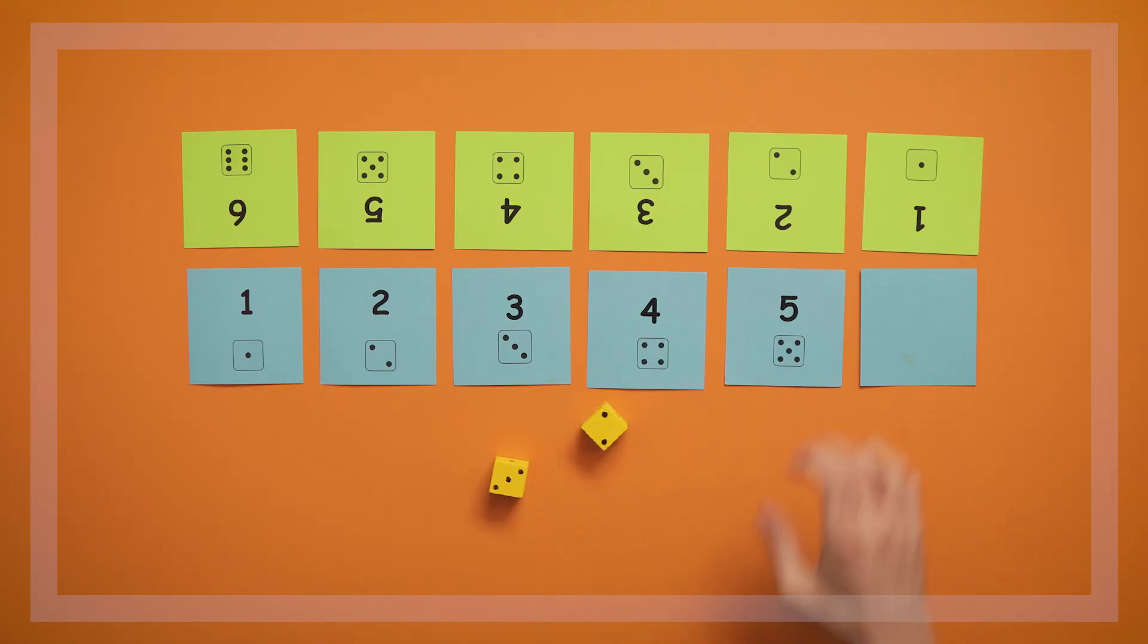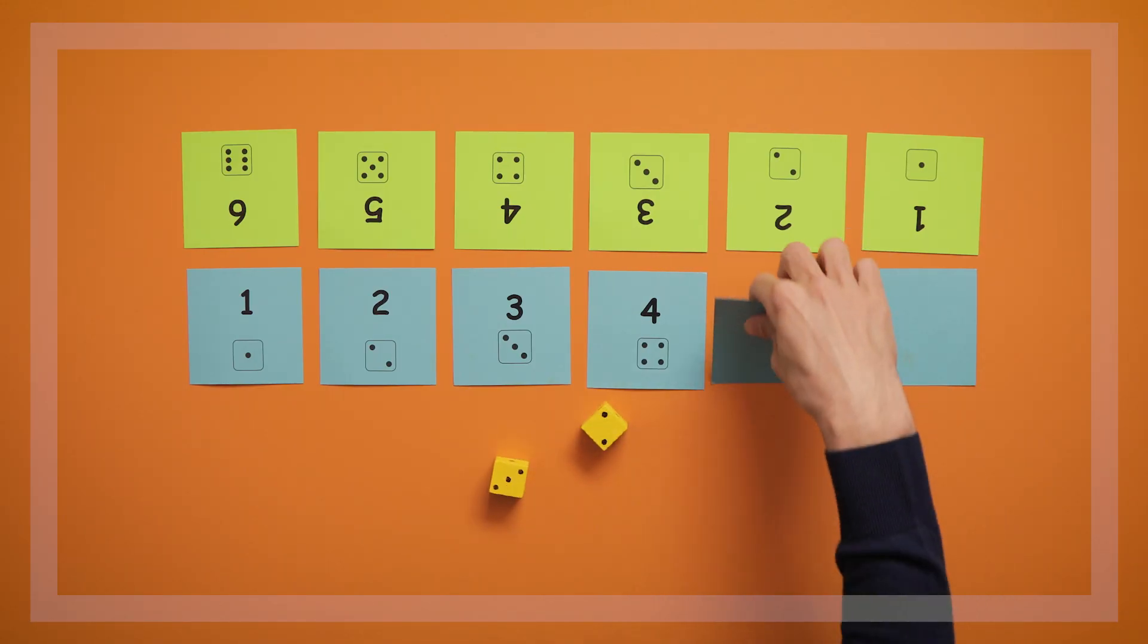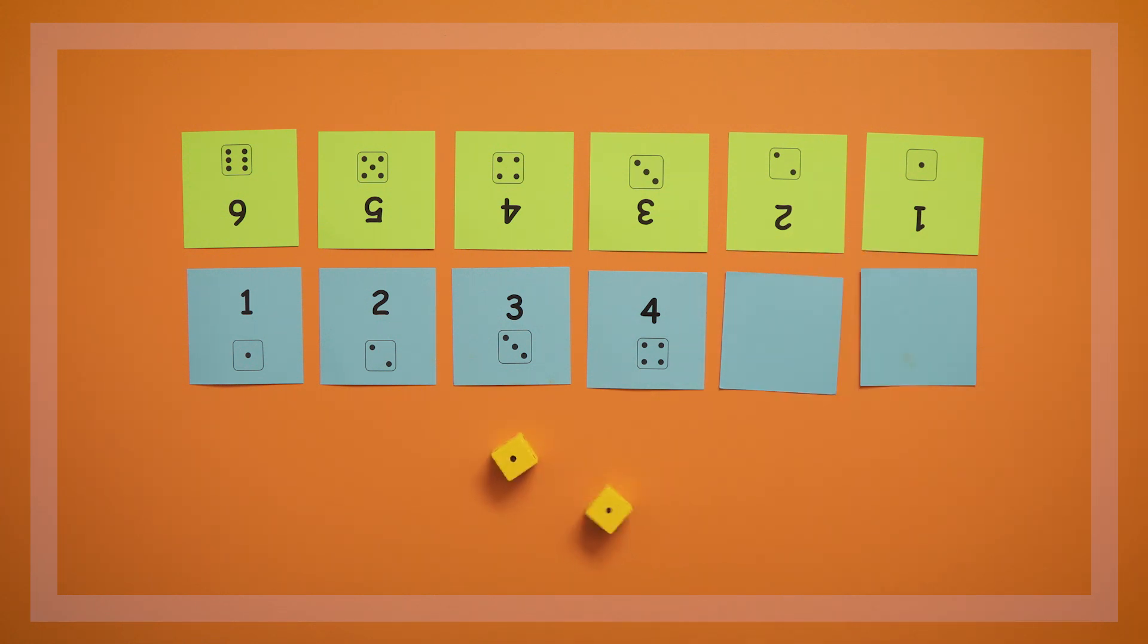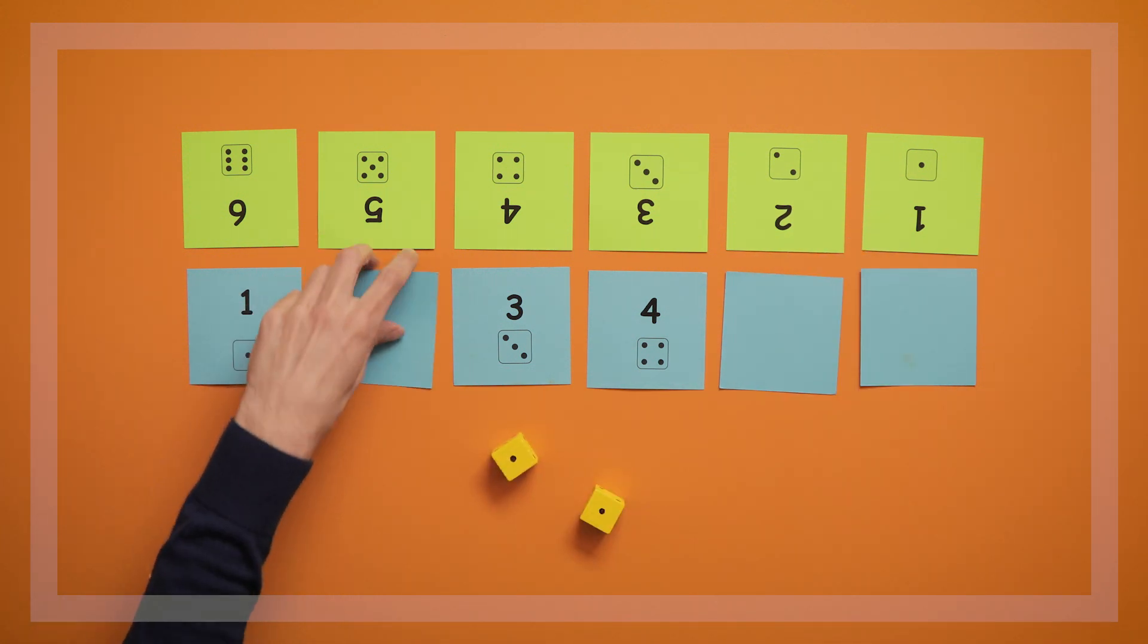Children can eventually move on to play the next level of this game, called Roll 2 1 to 6, where two dice are used with the 1 through 6 cards.